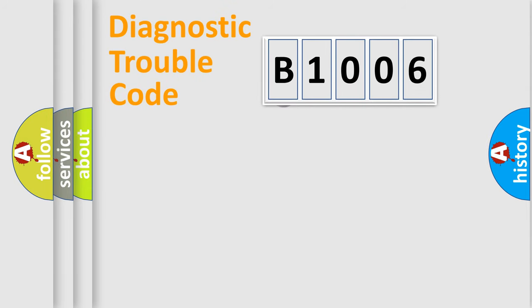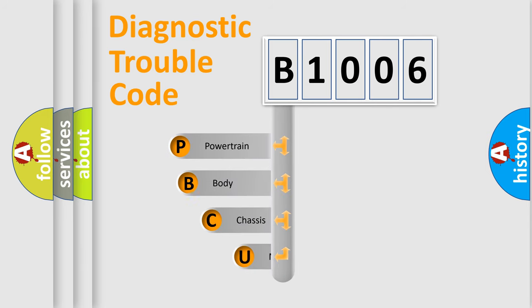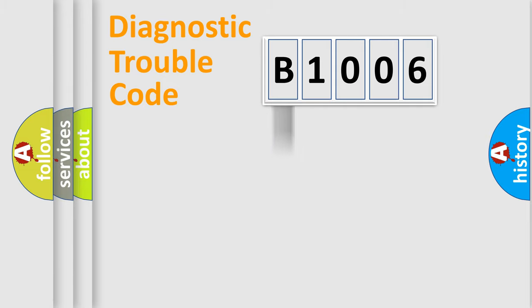First, let's look at the history of diagnostic fault code composition according to the OBD2 protocol, which is unified for all automakers since 2000. We divide the electric system of an automobile into four basic units: Powertrain, Body, Chassis, and Network. This distribution is defined in the first character of the code.